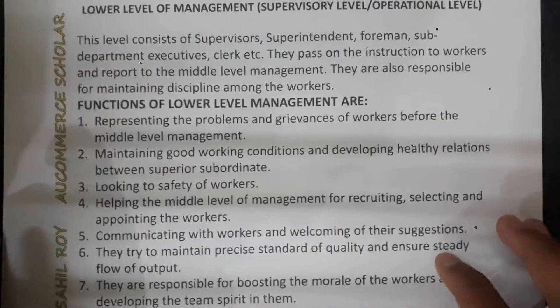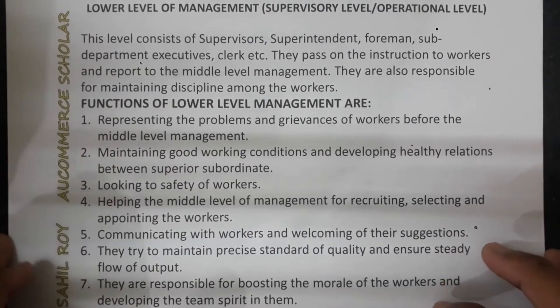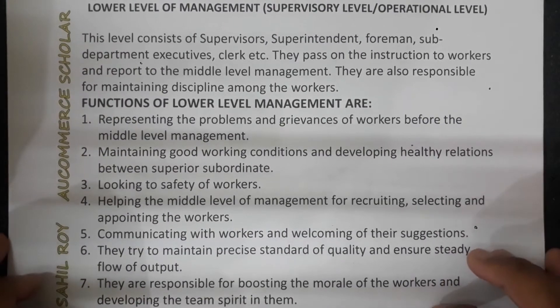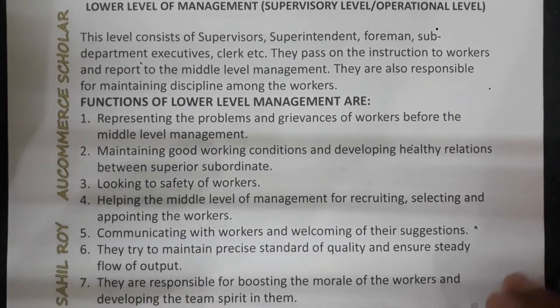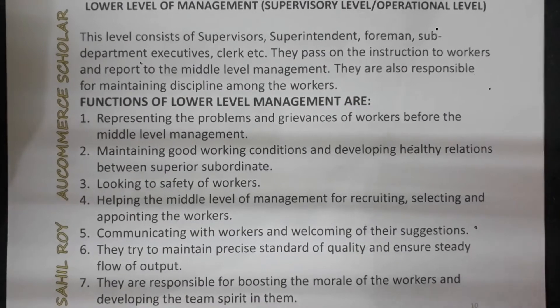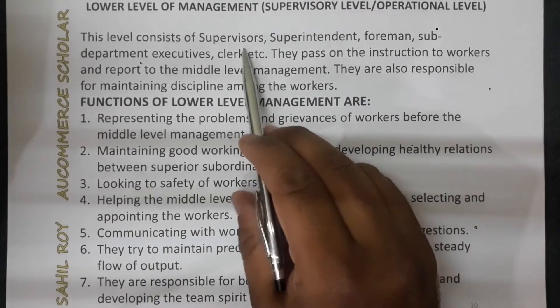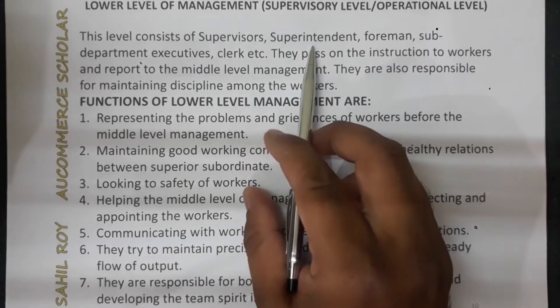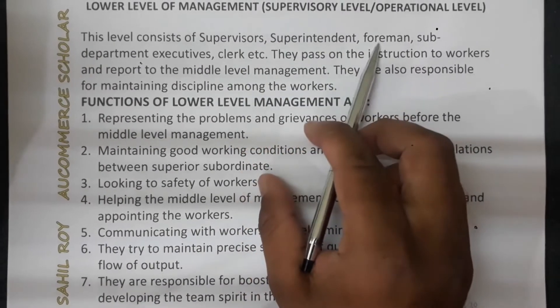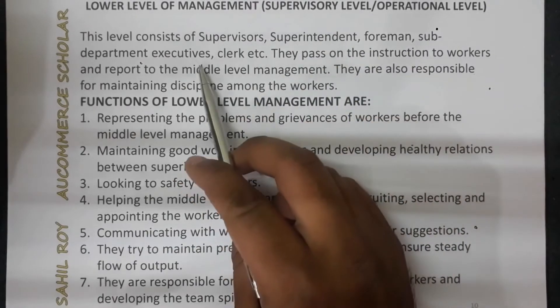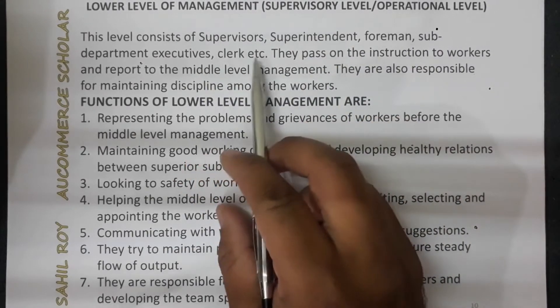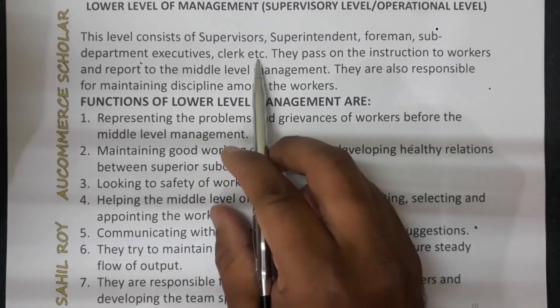The last one is lower level of management, which is also considered supervisory level or operational level. This level consists of supervisors, superintendents, foremen, sub-departmental executives, clerks, etc.